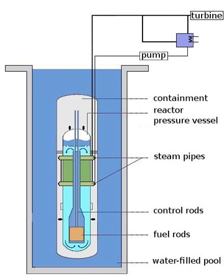Control rods are usually combined into control rod assemblies — typically 20 rods for a commercial pressurized water reactor assembly — and inserted into guide tubes within a fuel element. A control rod is removed from or inserted into the central core of a nuclear reactor in order to control the number of neutrons which will split further uranium atoms. This in turn affects the thermal power of the reactor, the amount of steam generated, and hence the electricity produced. The control rods are partially removed from the core to allow a chain reaction to occur, and the number of control rods inserted and the distance by which they are inserted can be varied to control the reactivity of the reactor.